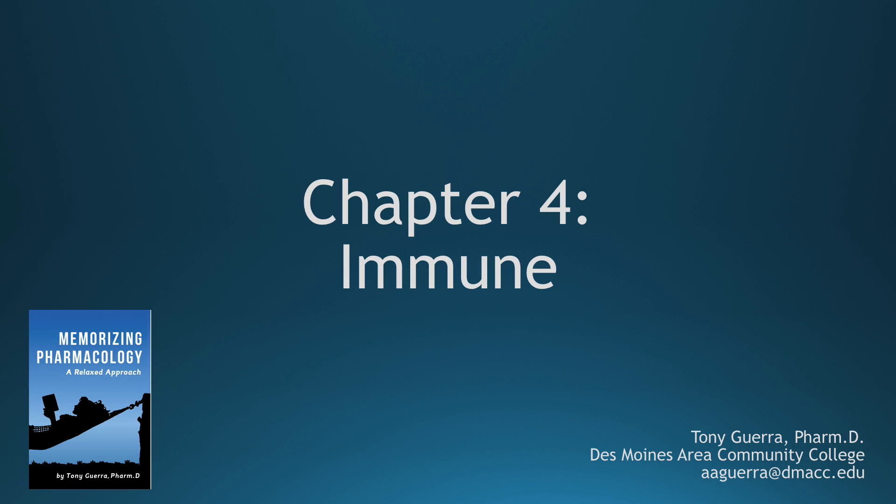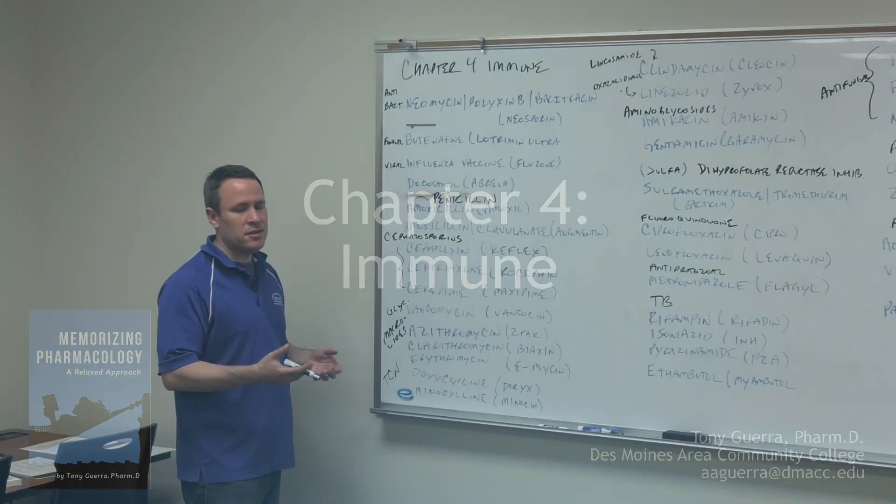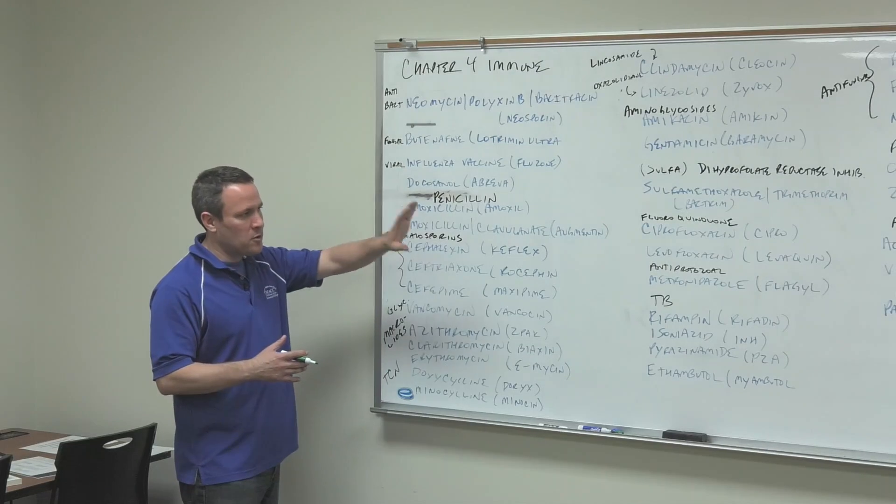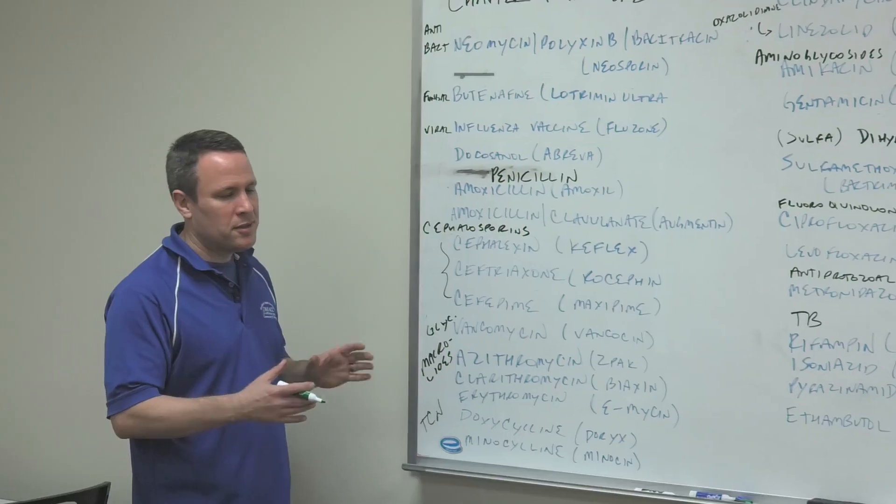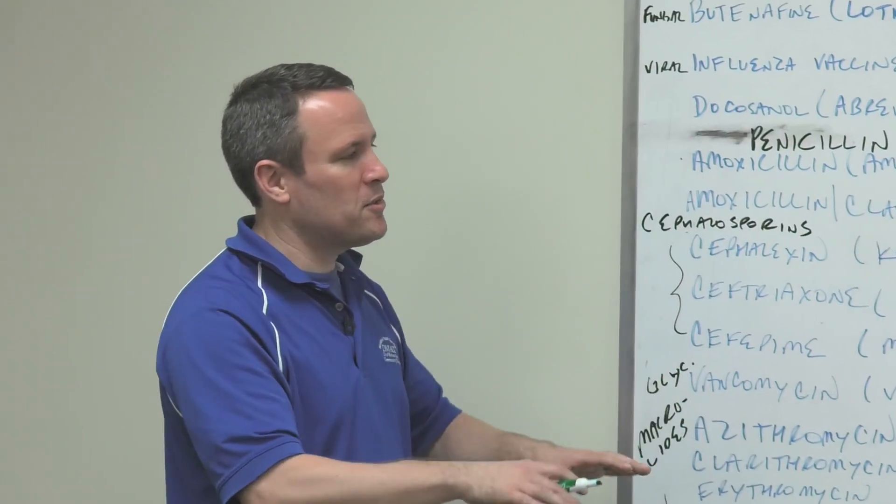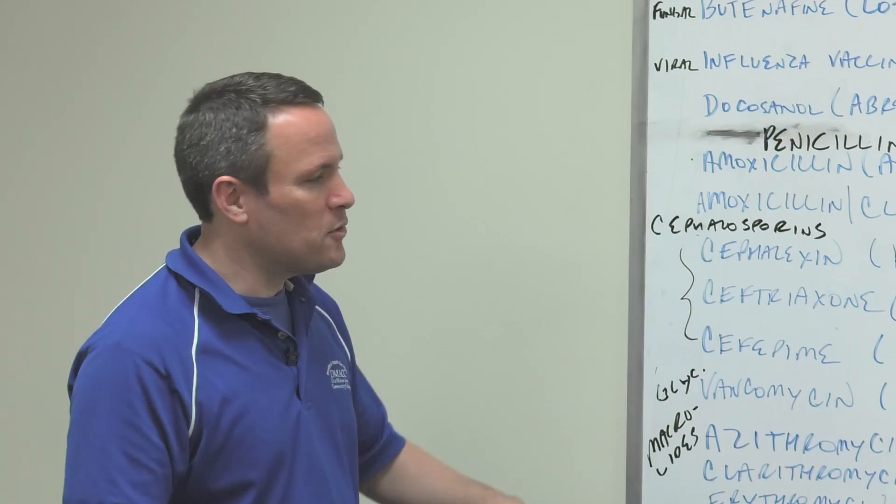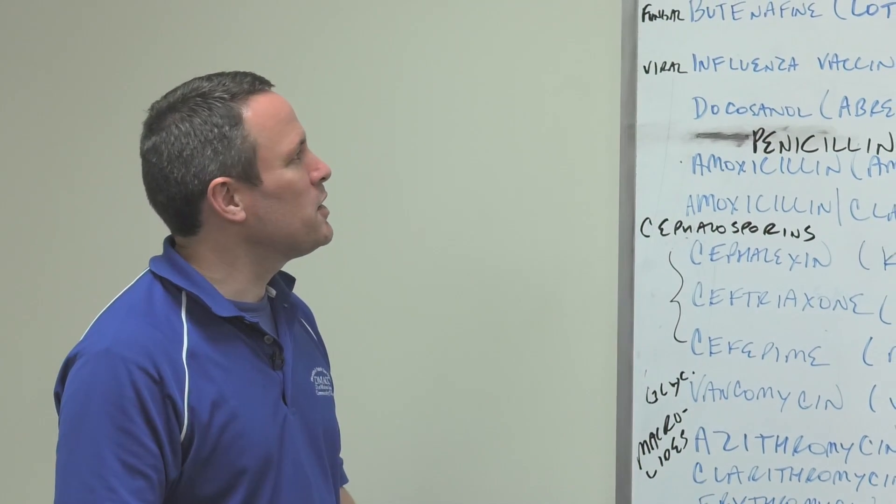Alright, welcome to Chapter 4: Immune. There's forty-some medications here, so I just wrote it up. I put one group out of order. My hand cramped writing all of this, so I'll just tell you which one's out of order, but we'll get to that in a bit.